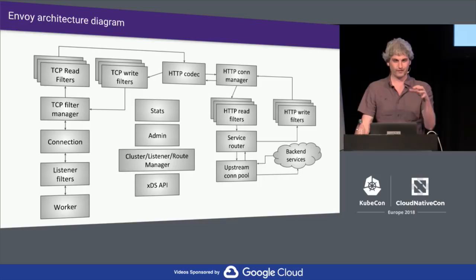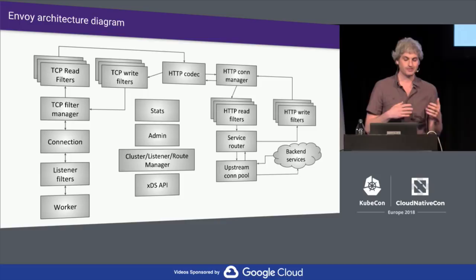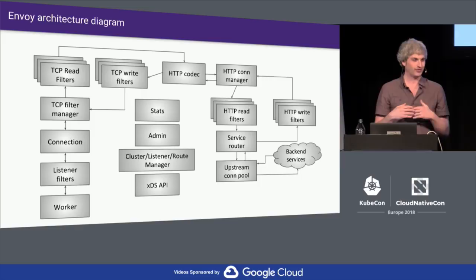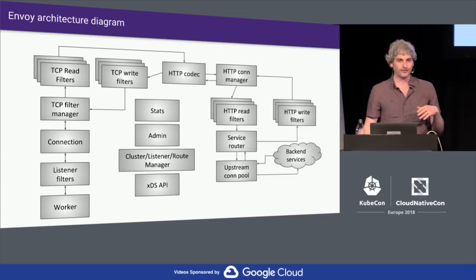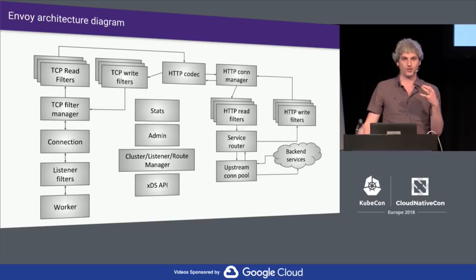From an HTTP processing perspective, we have an HTTP connection manager filter, which is an L3/L4 filter that parses out the bytes and makes messages — things like headers, body, and trailers. Once you're up at that layer, we have a separate set of filters that operate on those headers, body, and trailers. At the HTTP layer you can do auth, rate limiting, or buffering — but instead of operating at the byte level, we're operating at the HTTP message level. So from a filter writer perspective, it's much more natural.